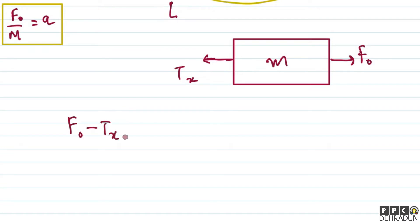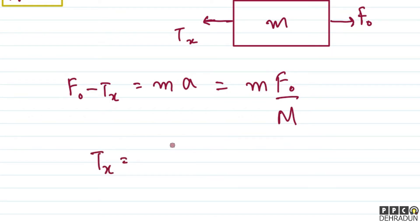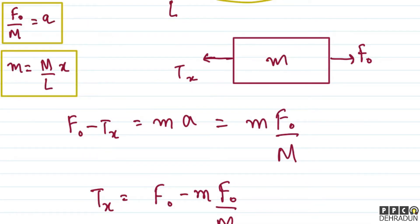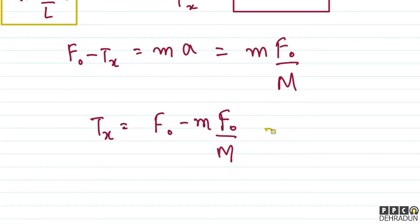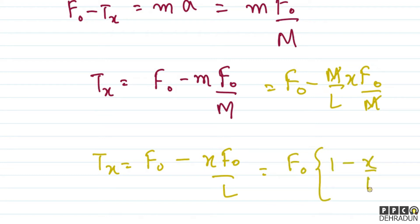We can write: F0 minus T(x) is equal to small m into acceleration. Acceleration we already found is F0 upon capital M. Substituting: F0 minus (M upon L into x) into (F0 upon M) gives T(x) equal to F0 minus x·F0 upon L, which equals F0 multiplied by (1 minus x upon L). So tension at distance x is F0 × (1 − x/L).